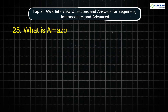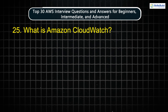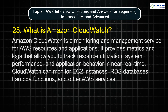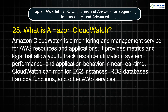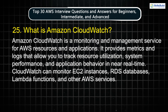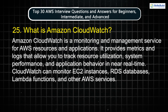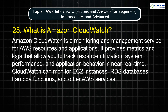Question 25: What is Amazon CloudWatch? Amazon CloudWatch is a monitoring and management service for AWS resources and applications. It provides metrics and logs that allow you to track resource utilization, system performance, and application behavior in near real time. CloudWatch can monitor EC2 instances, RDS databases, Lambda functions, and other AWS services.